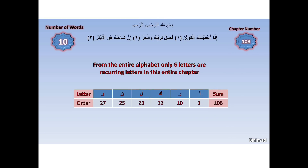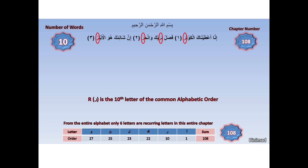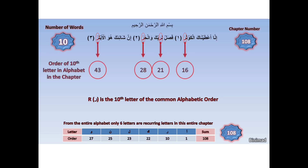If this is not shocking enough, we look at the positions of the letter R within this chapter. The first R is letter 16 in the chapter, the second is 21, the third is 28, and the last one is the 43rd letter. Their sum total is 108 — the numerical location of the tenth letter gives the number of the chapter that revolves around ten.